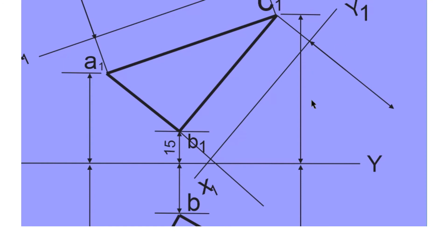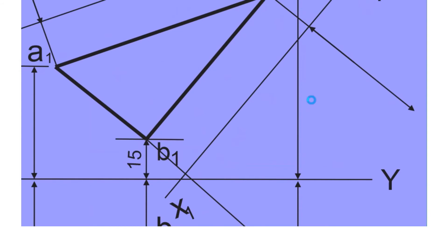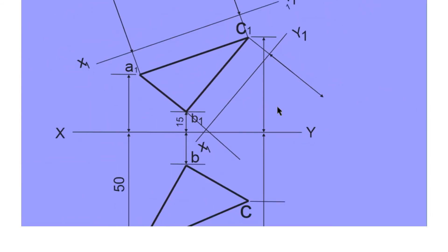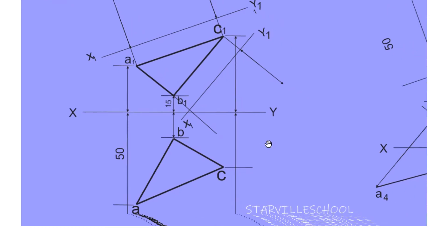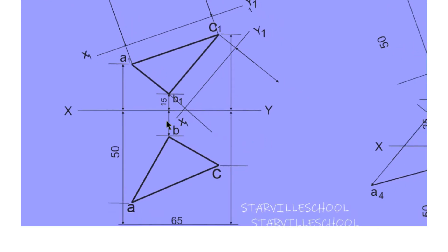The next thing is to take the distance from B to the XY line and transfer it. After taking that distance with your divider, you transfer it onto the X1Y1 reference line coming from B1.